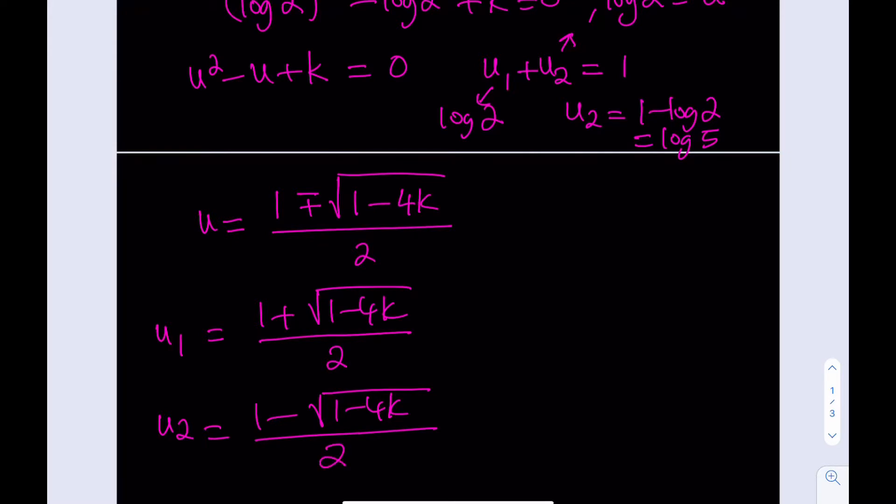We know that log 5 is greater than log 2 because log in base 10 is an increasing function. If you have a larger x value, the y value is also larger. Therefore, between these two solutions, the positive one is log 5 and the negative version is log 2.